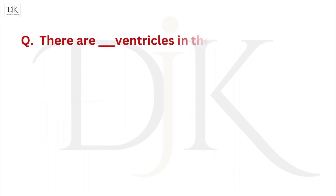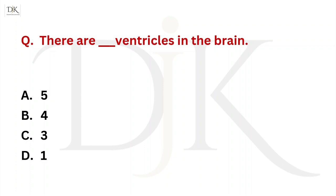There are how many ventricles in the brain? Right answer is four.